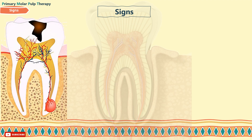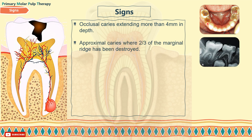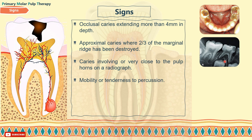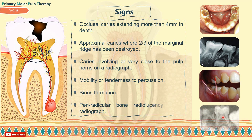Signs that, when observed, indicate the need for pulp therapy: occlusal caries extending more than 4 mm in depth; approximal caries where two-thirds of the marginal ridge has been destroyed; caries involving or very close to the pulp on a radiograph; mobility or tenderness to percussion; sinus formation; and periradicular bone radiolucency on a radiograph.